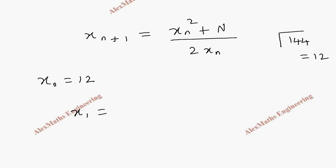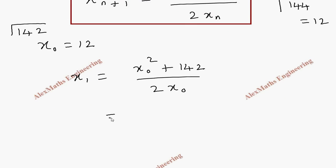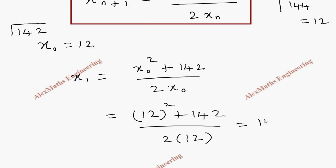So now the value of x1 using this formula, wherever n is there we put 0. So it is x1 equal to x naught square plus n by 2x naught. Since we are calculating root 142, the value of n is 142. If I substitute 12 for x naught, 12 square plus 142 by 2 into 12. Using calculator, this is 11.9167 after rounding off.